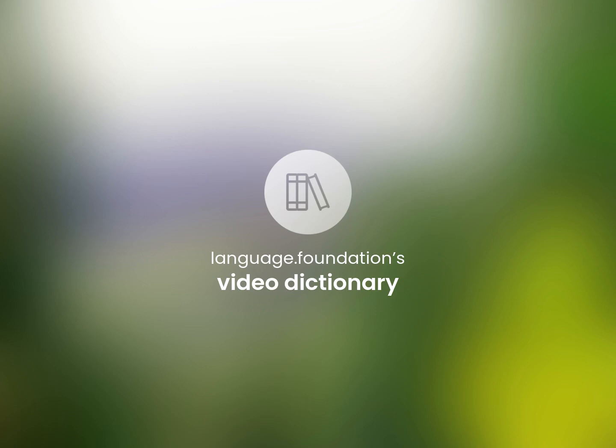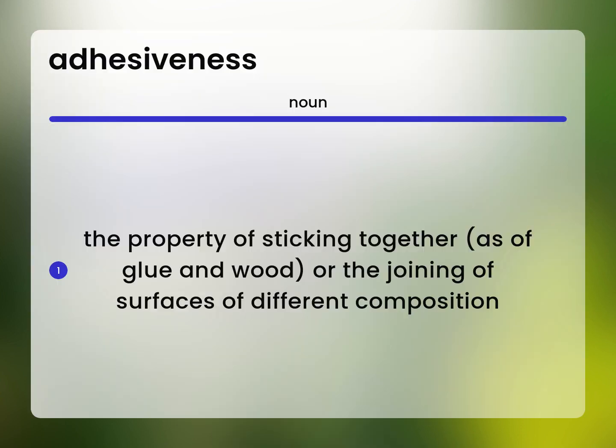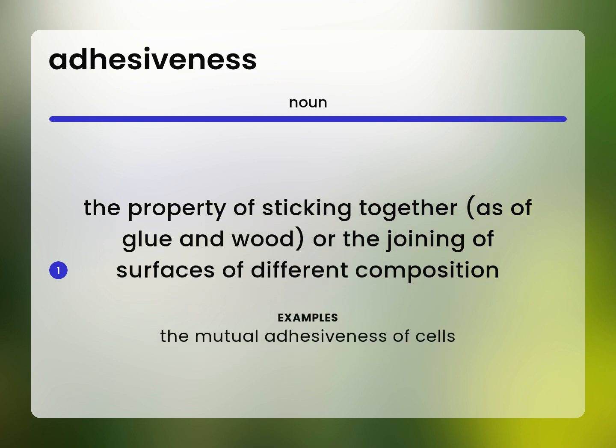Language.Foundation's Video Dictionary, helping you achieve understanding. The property of sticking together, as of glue and wood, or the joining of surfaces of different composition. The mutual adhesiveness of cells.